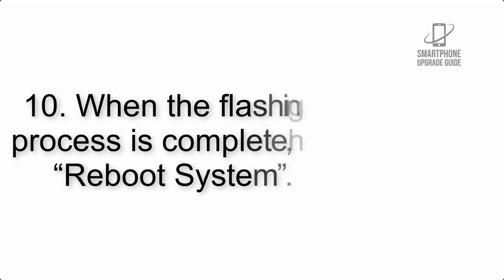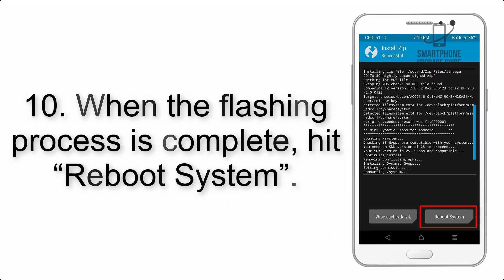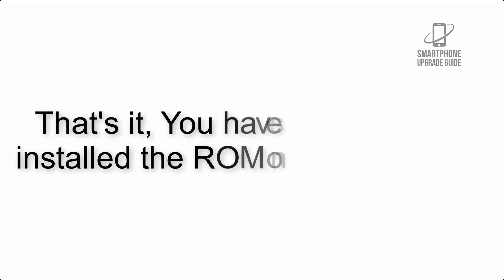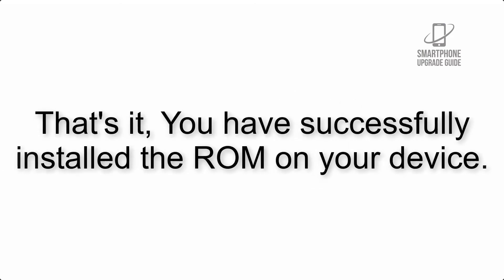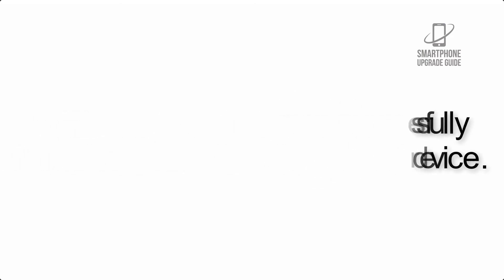Step 9: After GApps flashing completes, select Wipe Cache and Dalvik from the bottom left side of the screen and swipe to wipe. Step 10: When the flashing process is complete, hit Reboot System. That's it — you have successfully installed the ROM on your device.